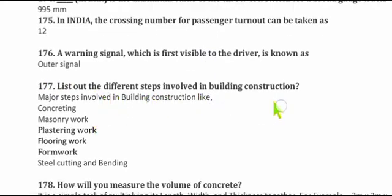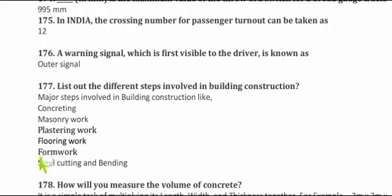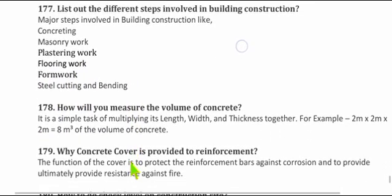Question 177: List the different steps involved in building construction. The major steps are: concreting, masonry work, plastering work, flooring work, formwork, and steel cutting and bending.